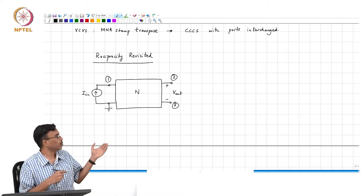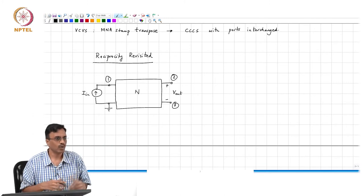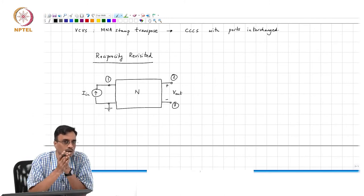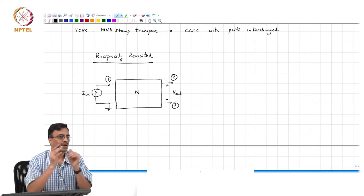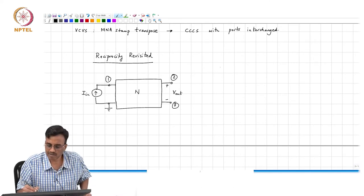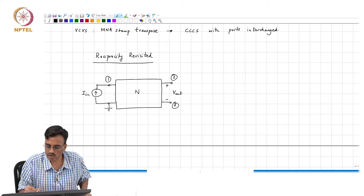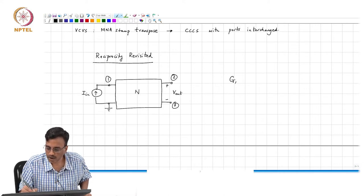And how will I go about solving the network? Let us say I know the internals of the network. What will I do? Basically, just go and write the MNA equations for the entire network, and you will basically find that you will get an equation of the form some augmented conductance matrix.